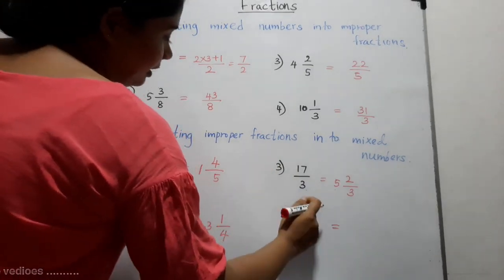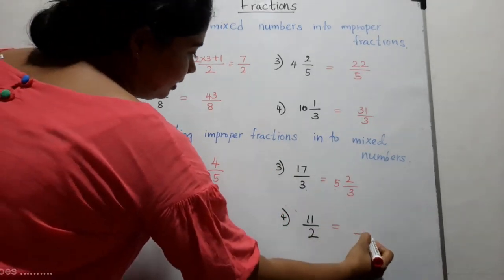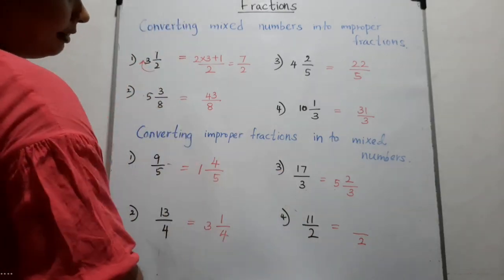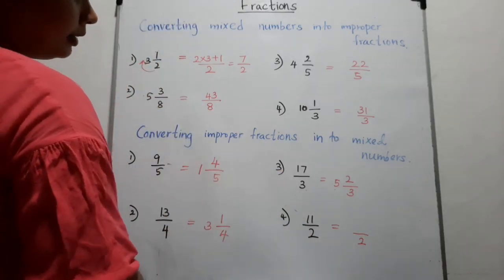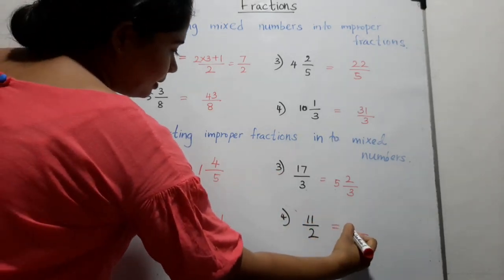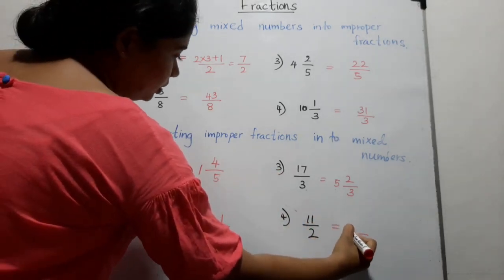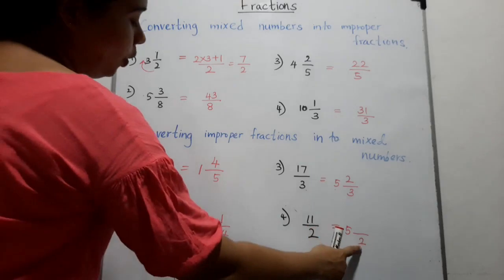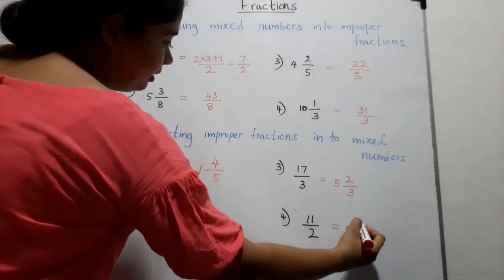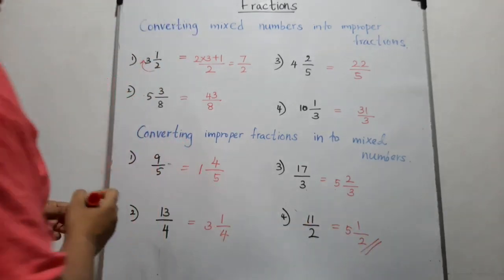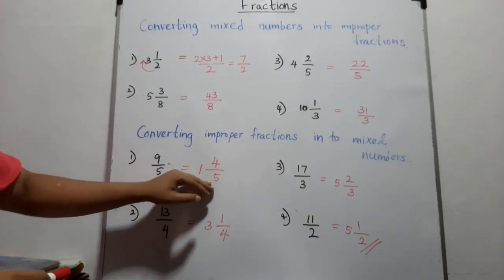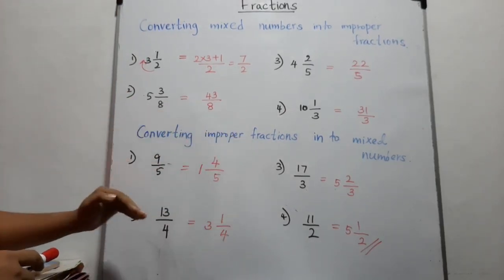Next: eleven-halves. Denominator is two. How many twos are there in eleven? Two into five is ten, so there are five twos. Ten add one is eleven. This is the method of converting an improper fraction into a mixed number.